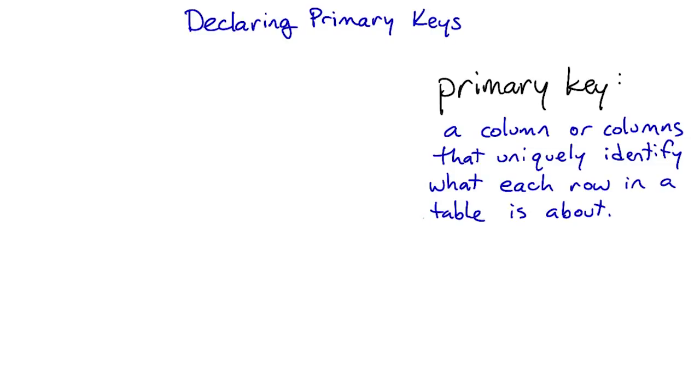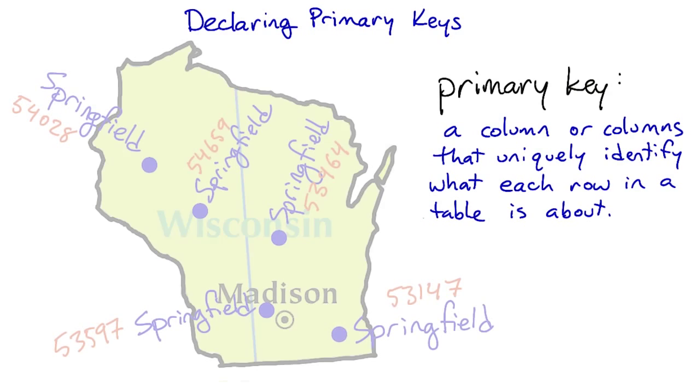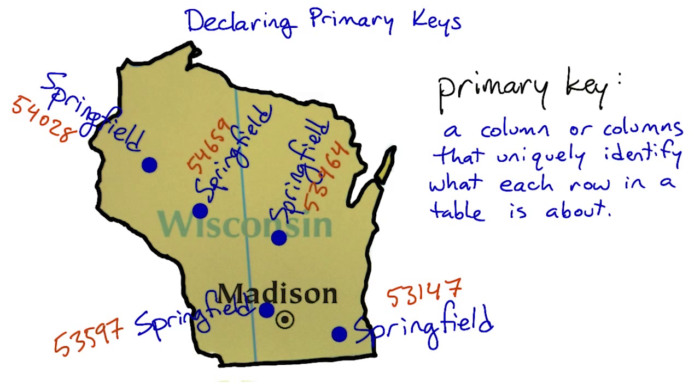Remember the bit about US city and state not being unique because there are five Springfields in Wisconsin? If we want a primary key for places, we have to use something like a postal code or coordinates or something.